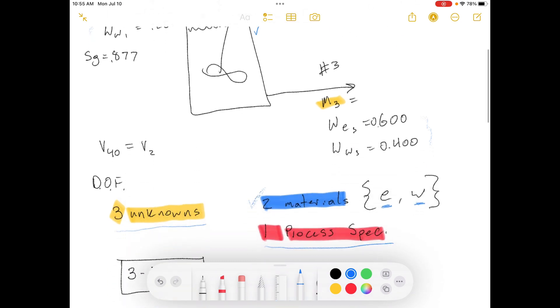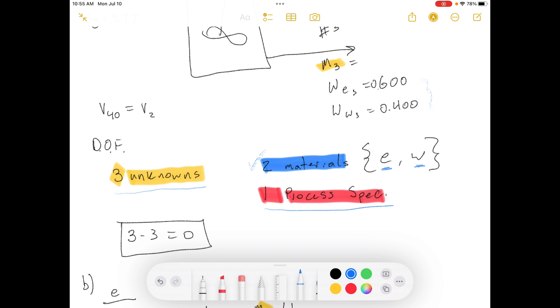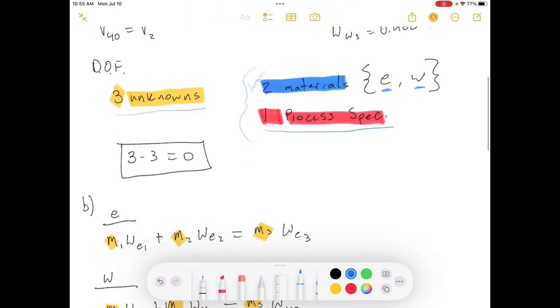With all that information, we have three unknowns and three pieces of information that we can create independent equations around. So that means our degree of freedom analysis is three minus three equals zero, so we have zero degrees of freedom.